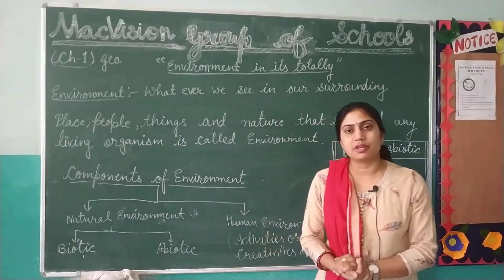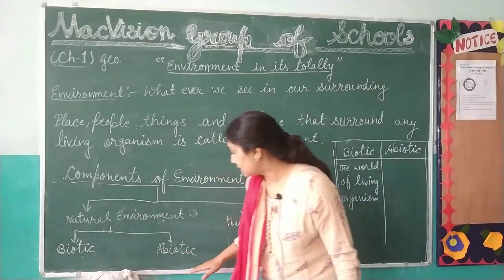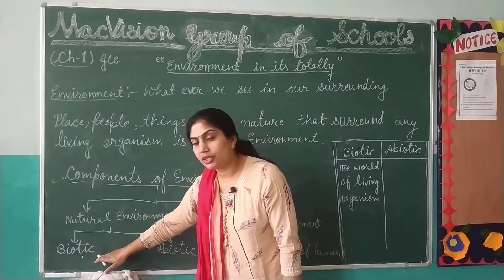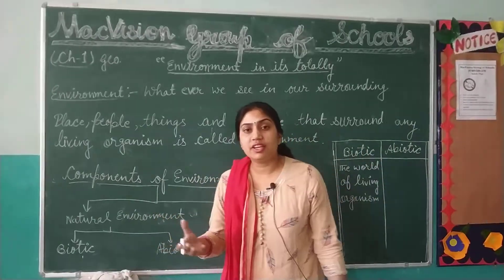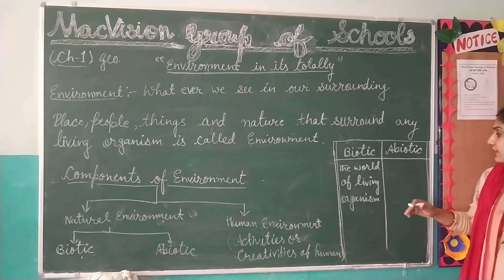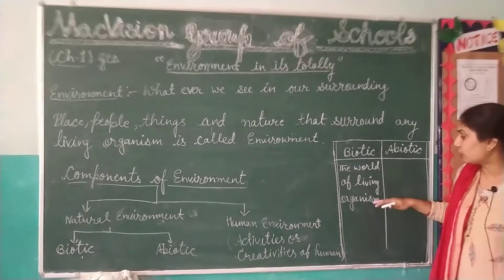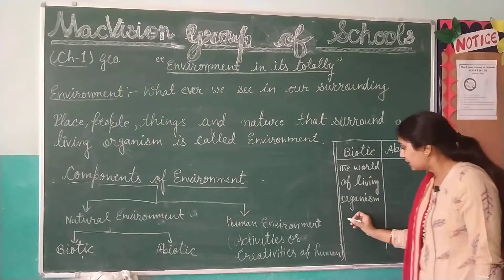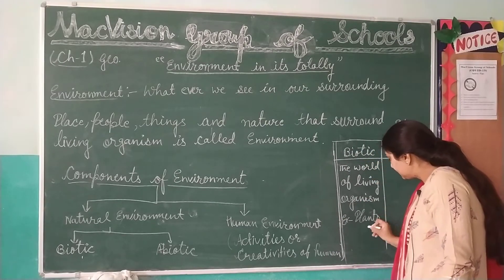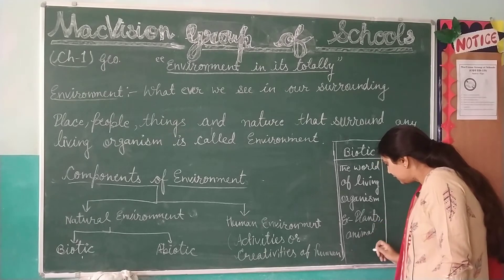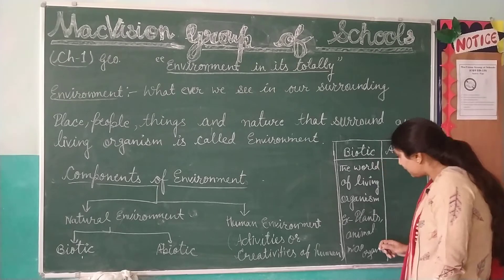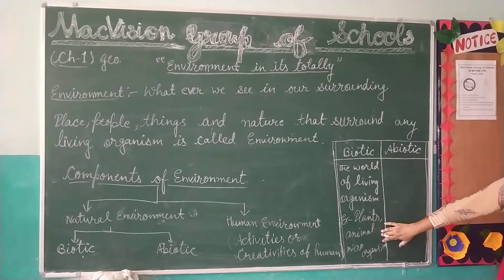The natural environment is further divided into two parts: the first is biotic and the second is abiotic. Biotic components are the living components — those parts belonging to living organisms. Examples of biotic elements include plants, animals, and microorganisms.